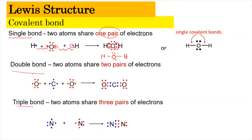For the double bond, it happens when two pairs of electrons are shared on each side. The red and blue electrons join together to form one bond, and another red and blue pair join to form a second bond — so two bonds on each side. This gives carbon dioxide, which has double bonds on both the right and left sides of the central carbon atom, formed by sharing two pairs of electrons on each side.